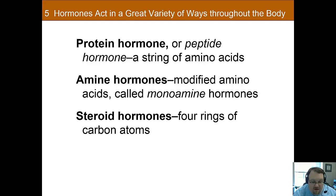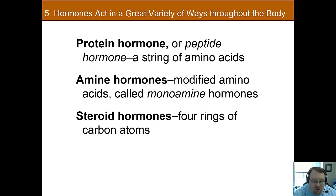Steroid receptors are often within the cells because they don't need to be on the outside — these steroid hormones can pass right through the lipid bilayer cell membrane. For protein and amine hormones, the receptors are almost always on the cell wall. For steroid hormones, the receptors are usually inside the cell.